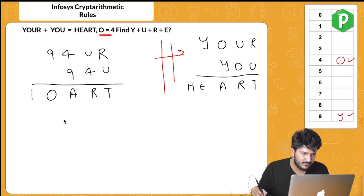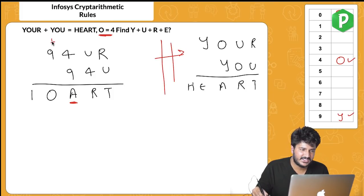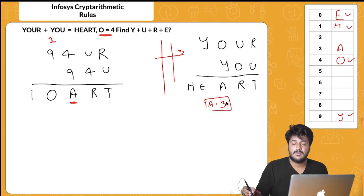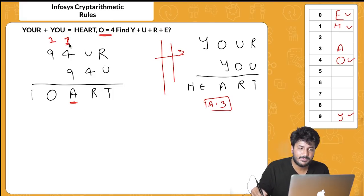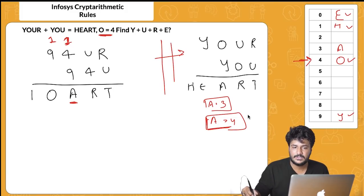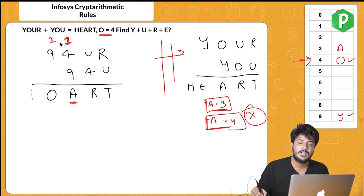From the next column, O plus Y: 4 plus 9 equals 13, so A equals 3 with one carry going to the next step. We also check whether a carry could already have come in from the previous column. If A were 9+4+1=14, then A would be 4 — but 4 is taken by O. So A is confirmed as 3.